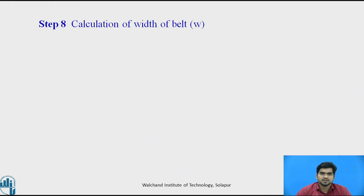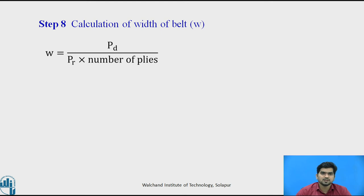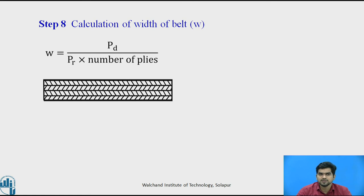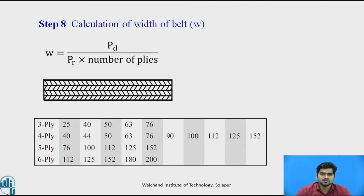In step number 8, calculate the width of the belt using the equation: width W = design power / (rated power × number of plies). A flat belt consists of multiple layers called plies. For example, a belt with 4 layers has 4 plies with a total width W. You must find both the number of plies and the total width by referring to the standard tables.